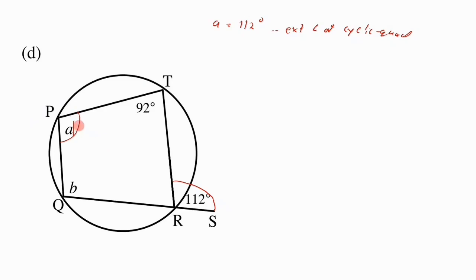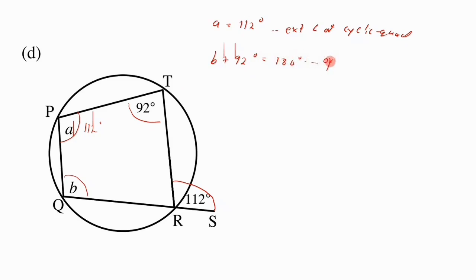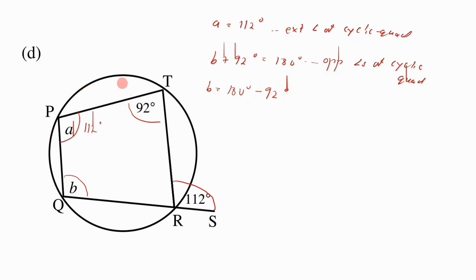We have 112 degrees filled in. For b, we look at Theorem 5, which says the opposite angles of a cyclic quad are supplementary. So b plus 92 degrees equals 180 degrees — opposite angles of cyclic quad. Therefore b equals 180 minus 92, which gives us 88 degrees.